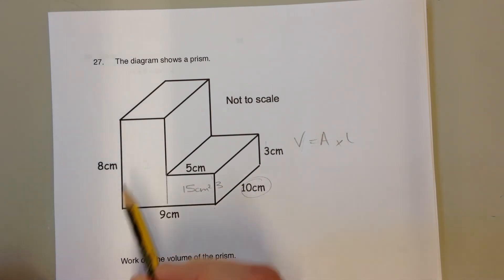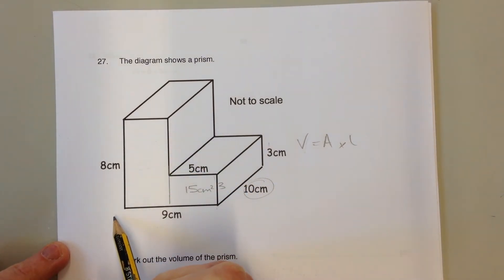This larger rectangle is 8 centimeters long. If this line is 9 centimeters from here to here, and this part of the line is 5 centimeters, then this part of the line must be 4 centimeters.